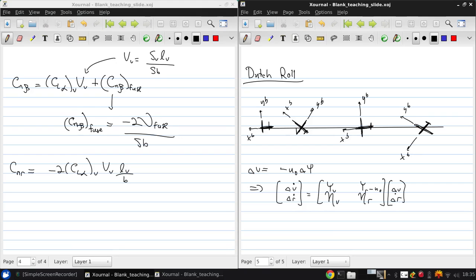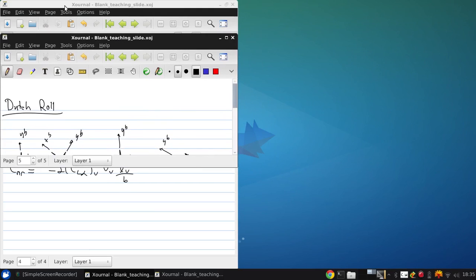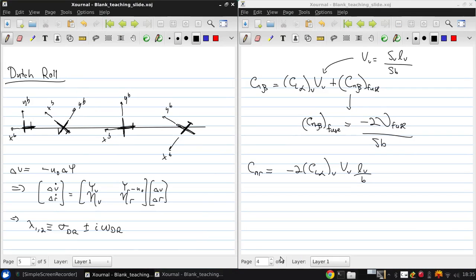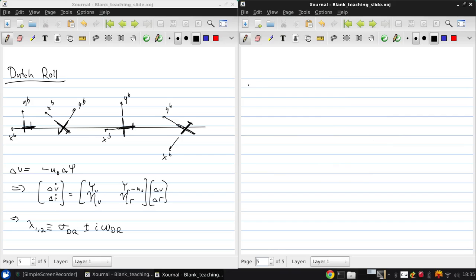So, this system then has eigenvalues σ_DR ± iω_DR, where σ_DR is approximately given by Nᵣ + Yᵥ, which can be expressed as (qSb²)/(2Iᵤu₀) times Cₙᵣ + Iᵤ/(mv²) times Cᵧᵦ. And ω_DR² is approximately u₀Nᵥ + YᵥNᵣ - NᵥYᵣ.